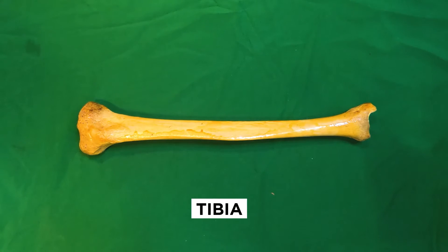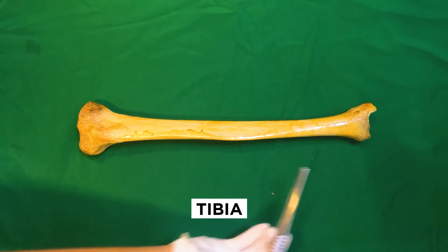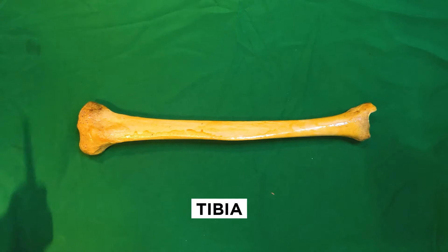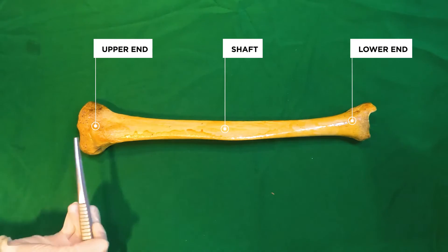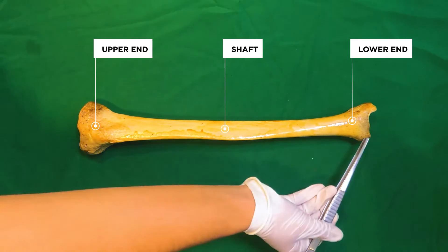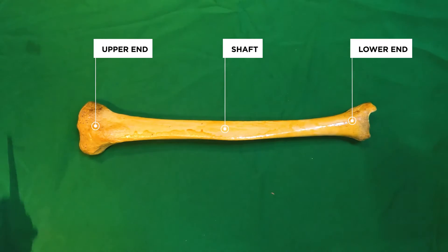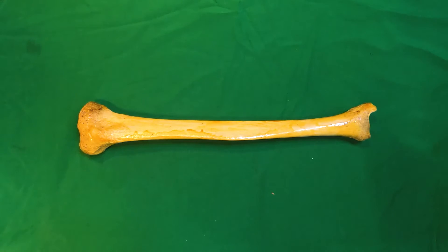The tibia is a long bone, so it has a shaft and two ends. If we are to determine the side of this particular bone, it can be done by following three steps.